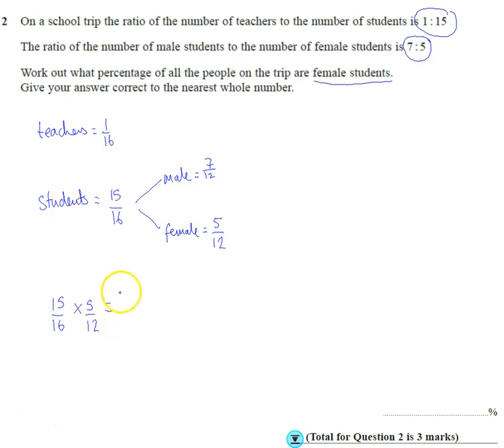So we've got 15 times 5 is 75, and 16 times 12 is 192. So if we just work out 75 divided by 192.